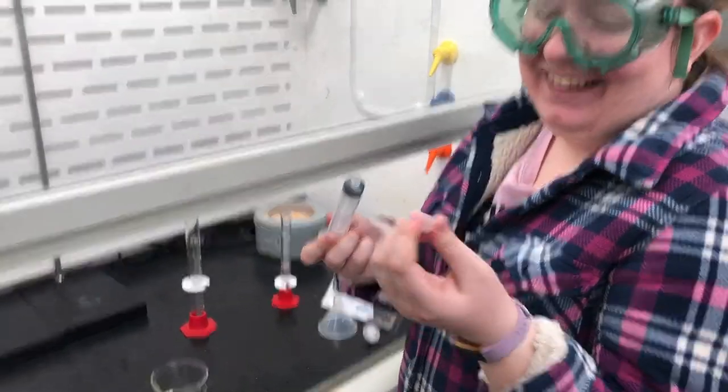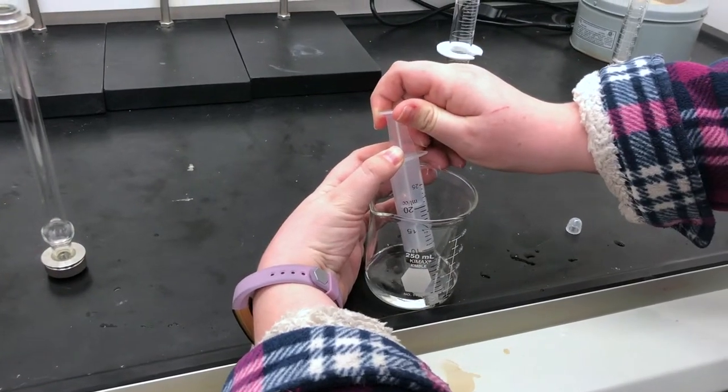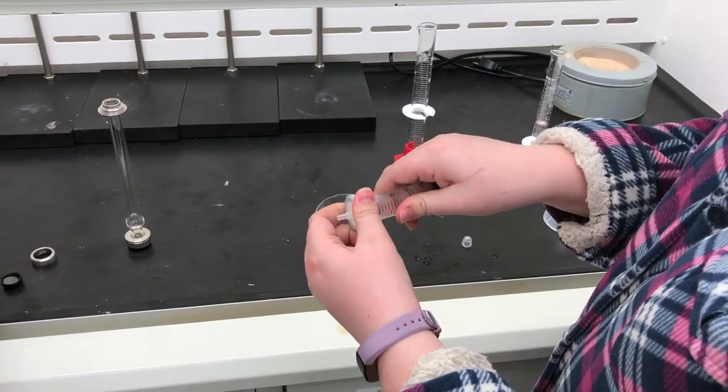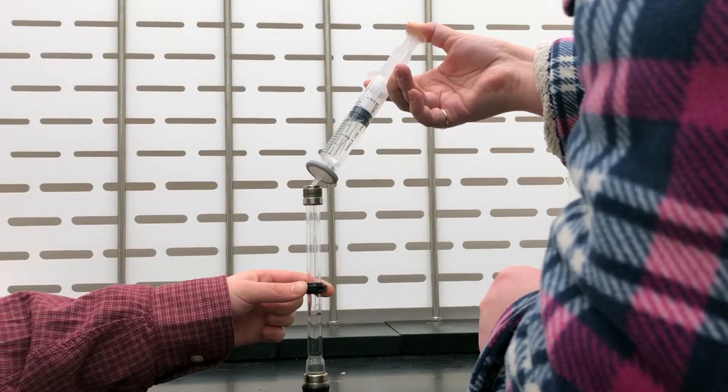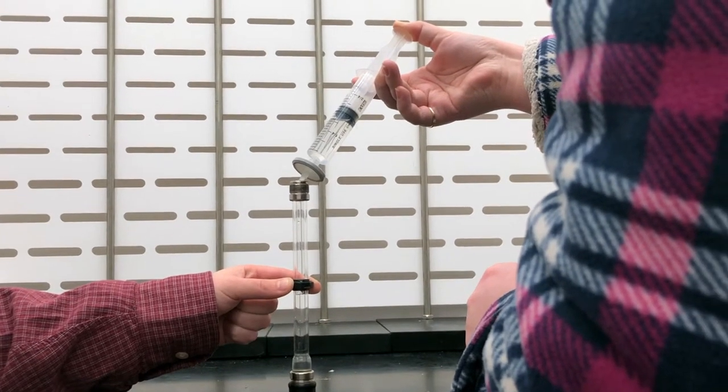The solution is then transferred to the polarimeter tube by drawing up the solution into a syringe, then attaching the syringe filter and filtering the solution into the tube. The filter helps to ensure the purest sample is analyzed.